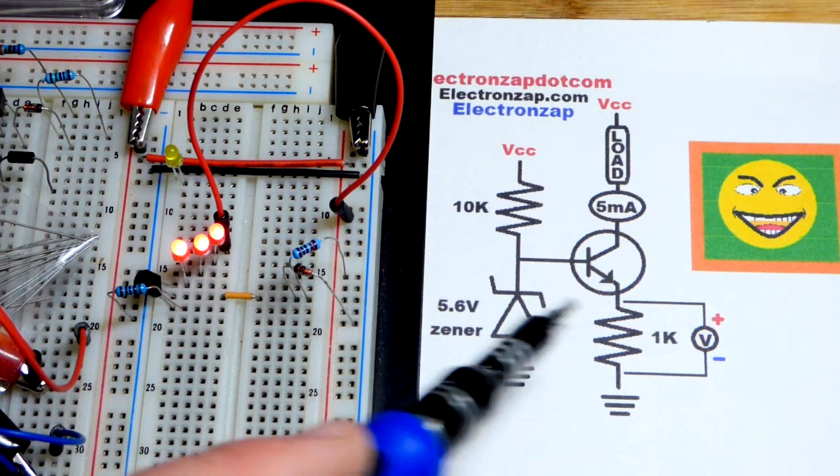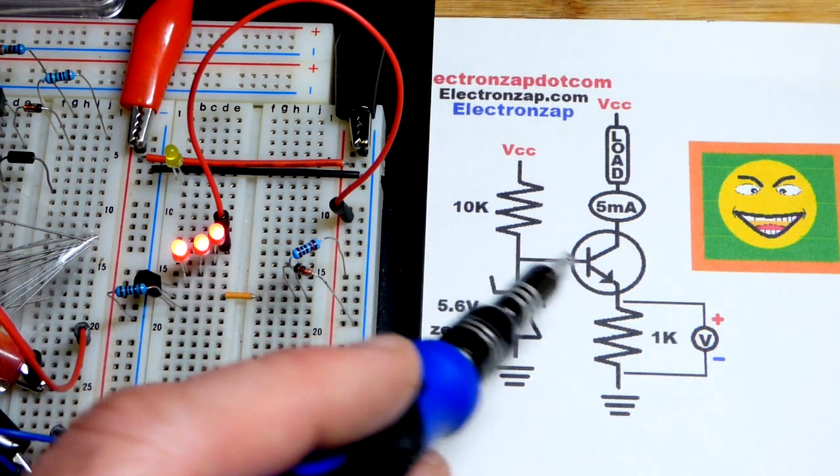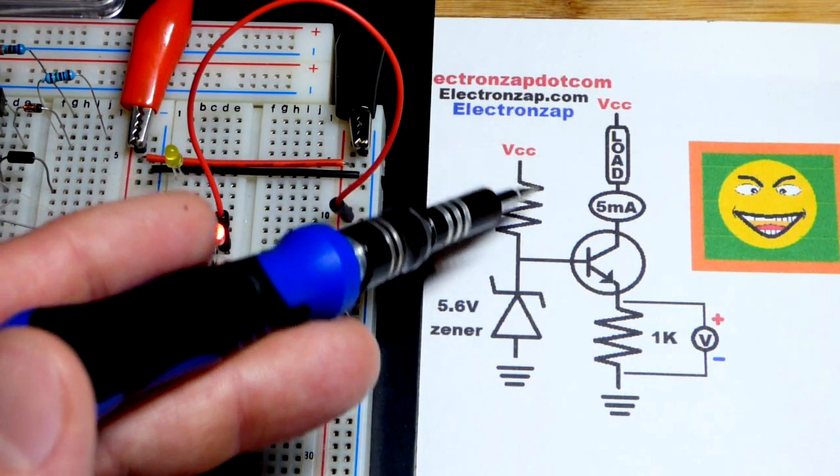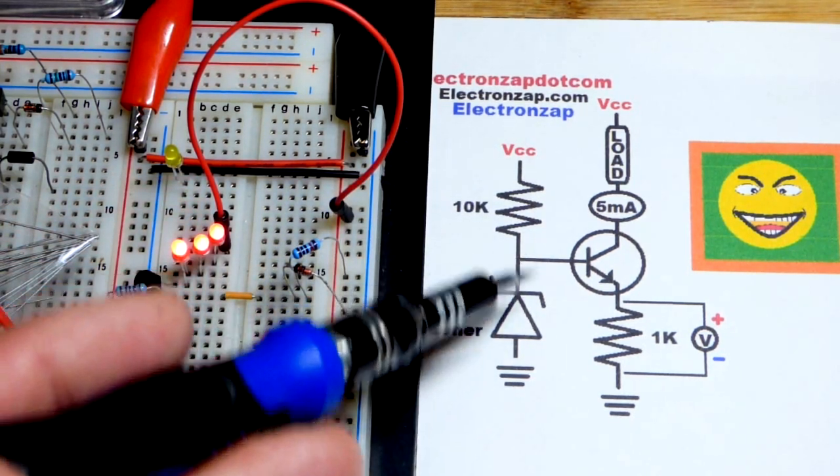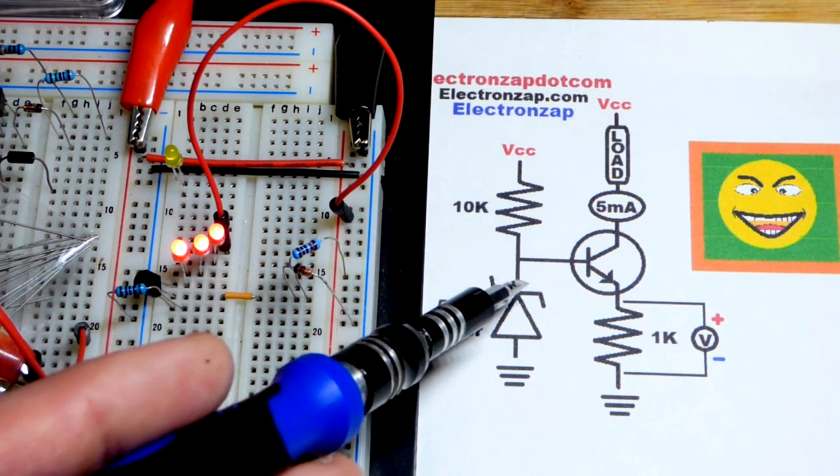We set the voltage across the resistor with a zener diode in this circuit. So we need some current to go through the zener diode to build up that voltage, so I got a 10 kilo-ohm resistor there to give it a current path.